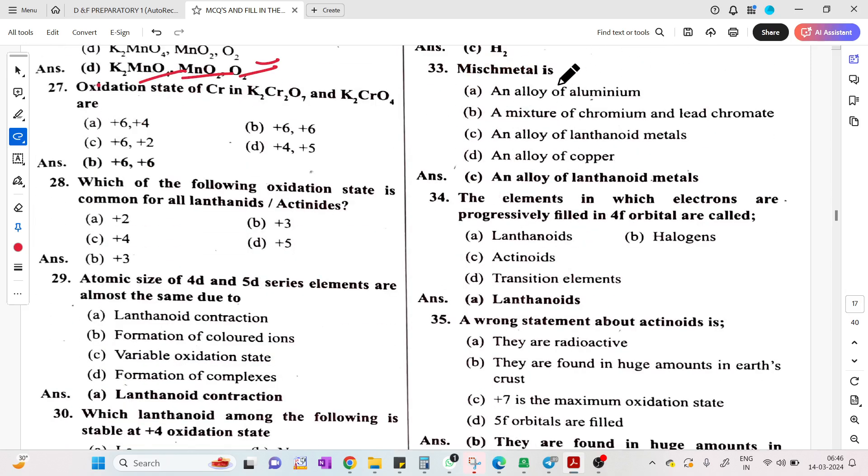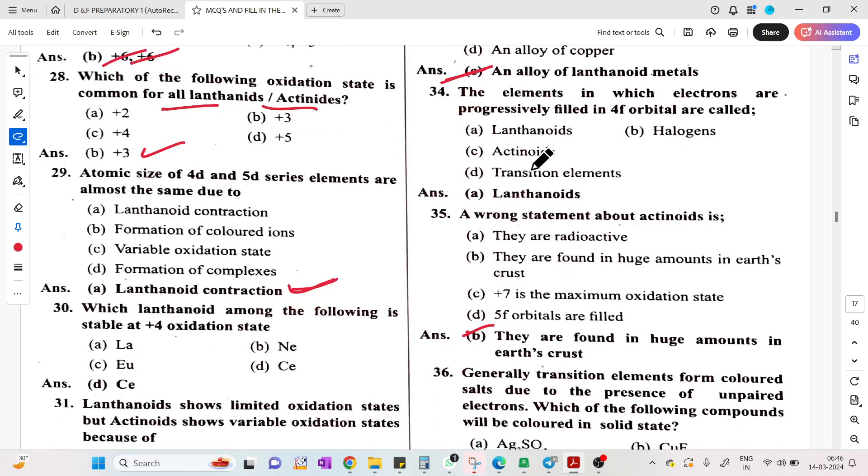Mish metal is a lanthanoid metal. Oxidation state of chromium in potassium dichromate and potassium chromate: plus 6 in both cases. Which oxidation state is common for all lanthanides and actinides? Plus 3. Atomic size of 4D and 5D series elements are almost same due to lanthanide contraction. Wrong statement about actinides: they are found in huge amounts is wrong - they are present in very trace quantities.